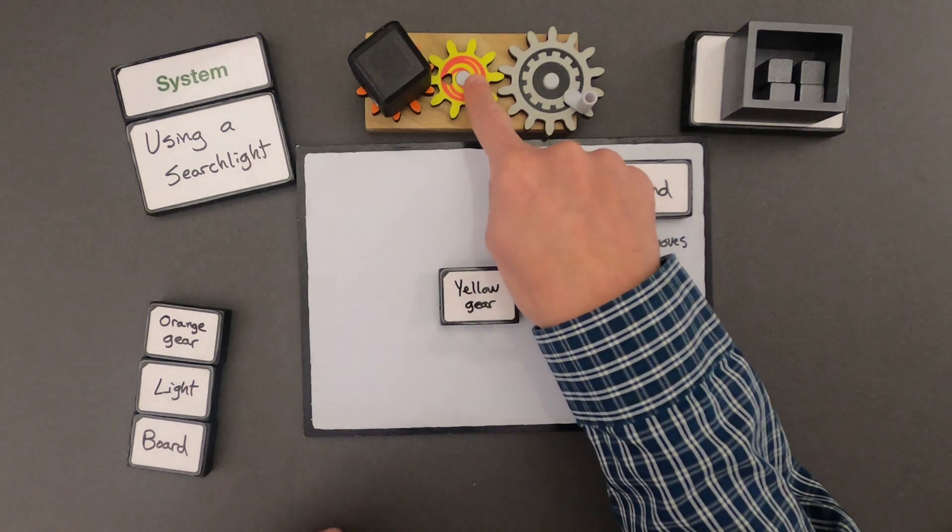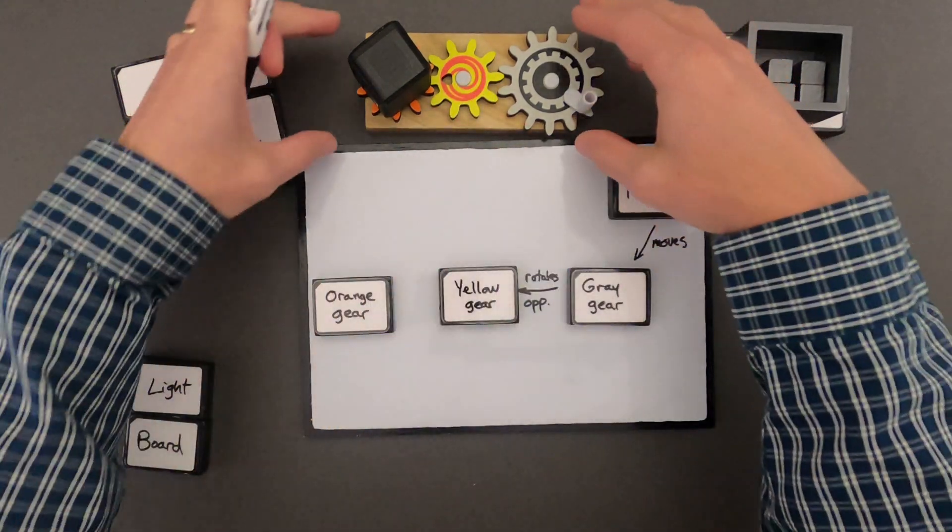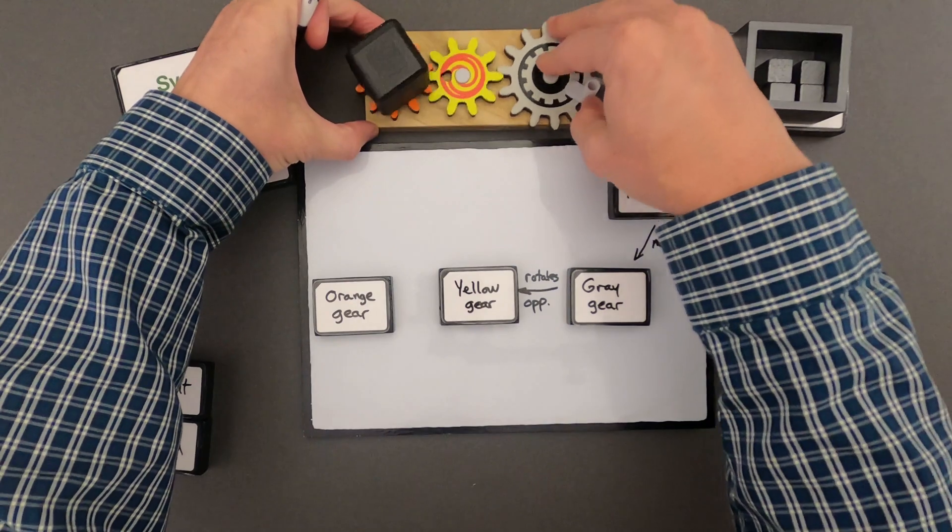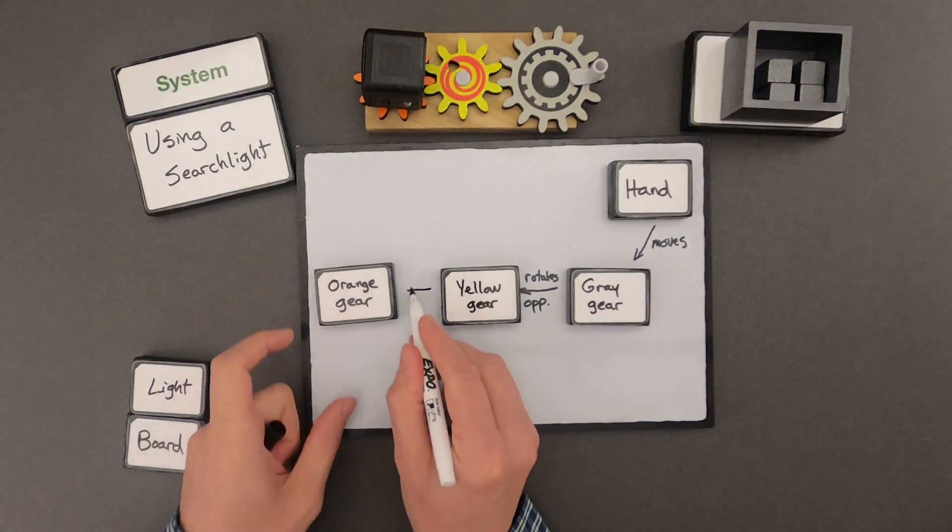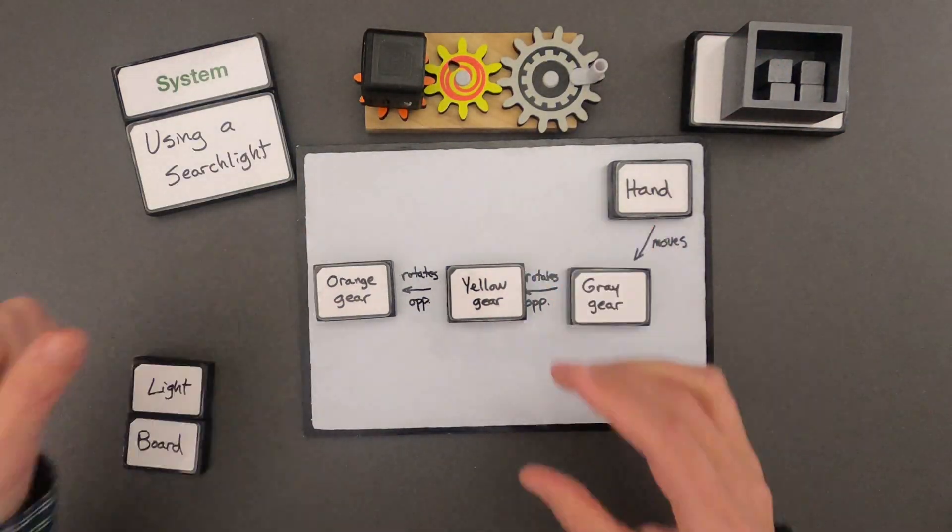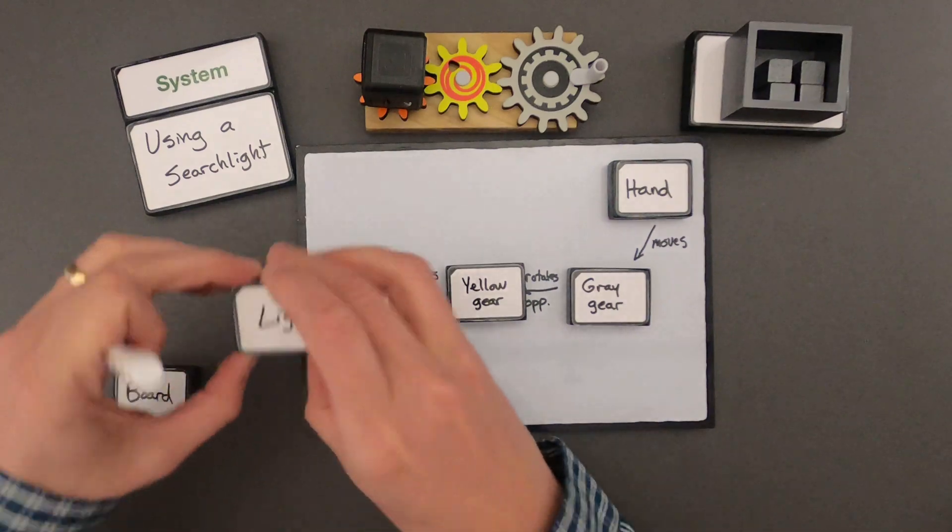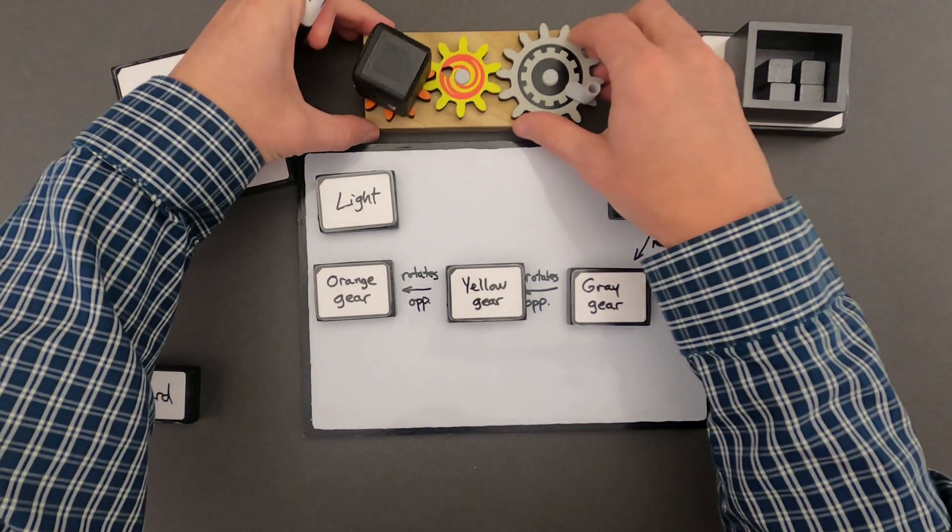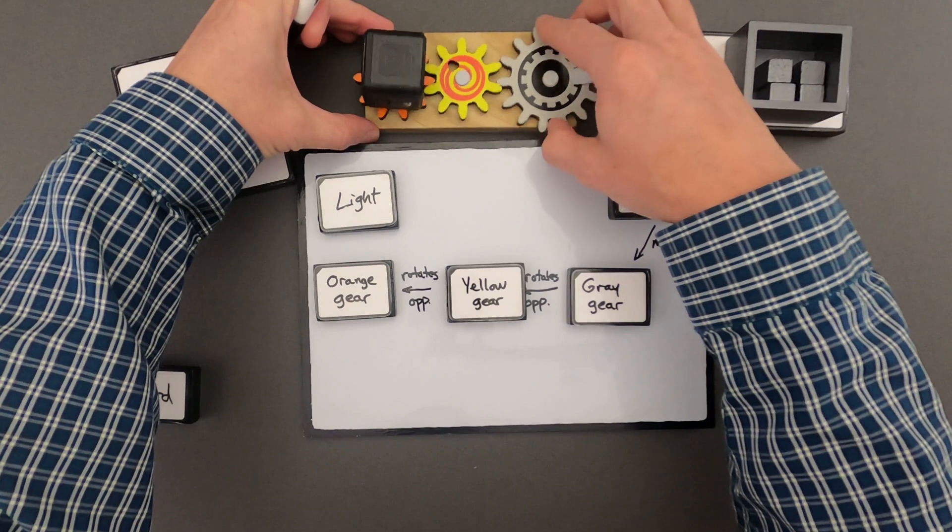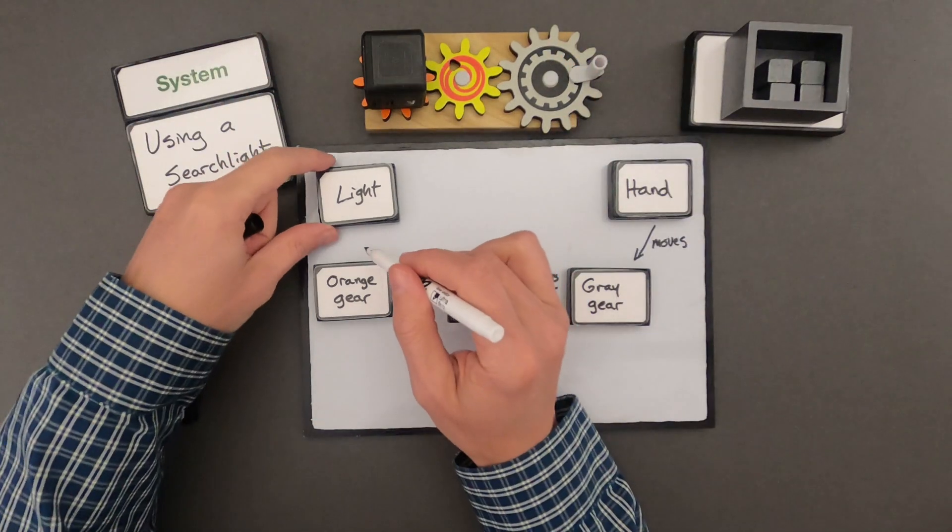I could look at the yellow gear and the orange gear, and we could find that the same thing is going to happen there. And now if we look at the light, what is the light doing? Well as the orange gear moves, then that just moves the light. So I could say the orange gear is going to move the light.